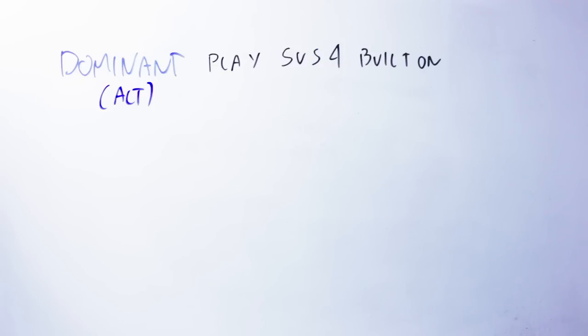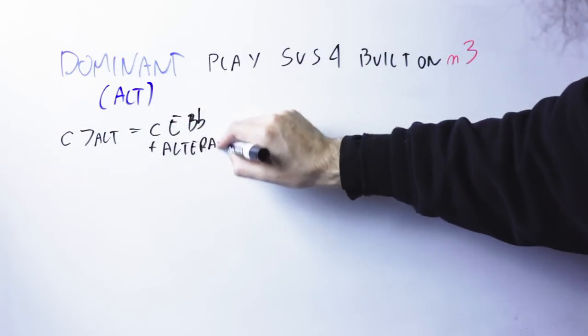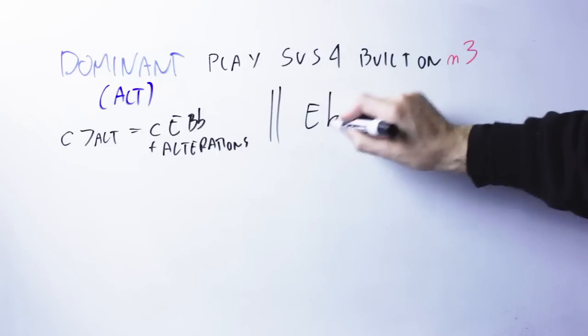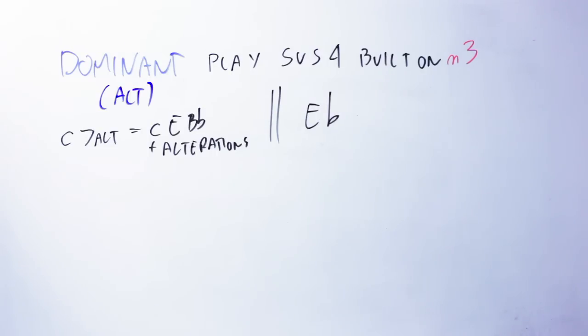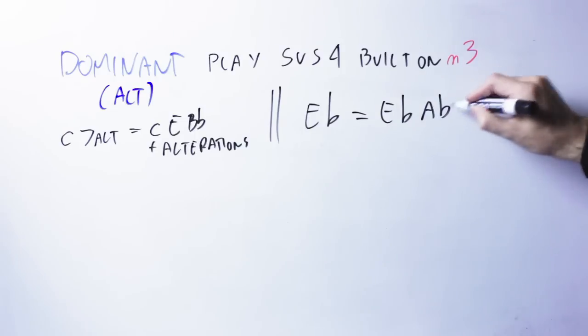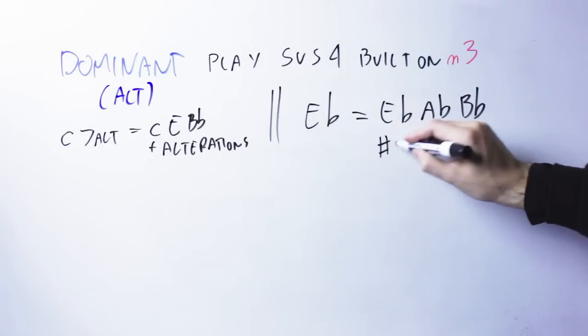On an altered dominant, you will play the suspended fourth chord built on the minor third of the chord. So, for instance, on a C7 that we know it's altered, but we assume it's altered. The minor third will be the E flat note, and so I will play the E flat suspended fourth. E flat suspended fourth is made by the notes E flat, A flat, B flat.